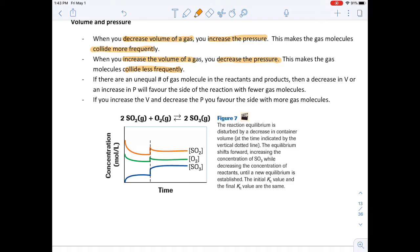Because what we're going to say is, if there are an unequal number of gas molecules in the reactants and products, so in this system, we have two gases and one. So we have a total of three gas molecules in the reactants and two gas molecules in the products. If there are an unequal number of gas molecules in the reactants and products, then a decrease in volume or increase in pressure favors the side with fewer gas particles.